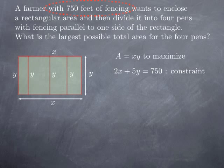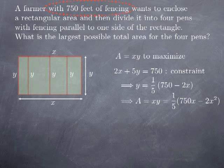This time I don't have symmetry between x and y, and I shouldn't expect the optimal rectangle to be symmetric. Again, we want to maximize A as a function of two variables x and y, so we transform it into a function of one variable using the constraint. Solving for y in the constraint gives y = (1/5)(750 minus 2x). Substituting into A = xy gives A = (1/5)(750x minus 2x squared). Now I want to maximize this on the closed interval [0, 375].